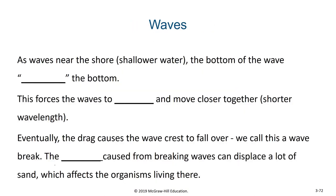As waves arrive near the shore, the bottom of the wave drags against the bottom. This forces the wave to slow down, and the waves start moving closer together — they have a shorter wavelength — but this also drives the wave to be taller and taller. This is why waves start increasing in height as they come into shore. Eventually the drag causes the wave crest to fall over the wave itself; we call this a wave break. The resulting surf caused by the breaking waves can displace a lot of sand and end up affecting the organisms living at the seashore.